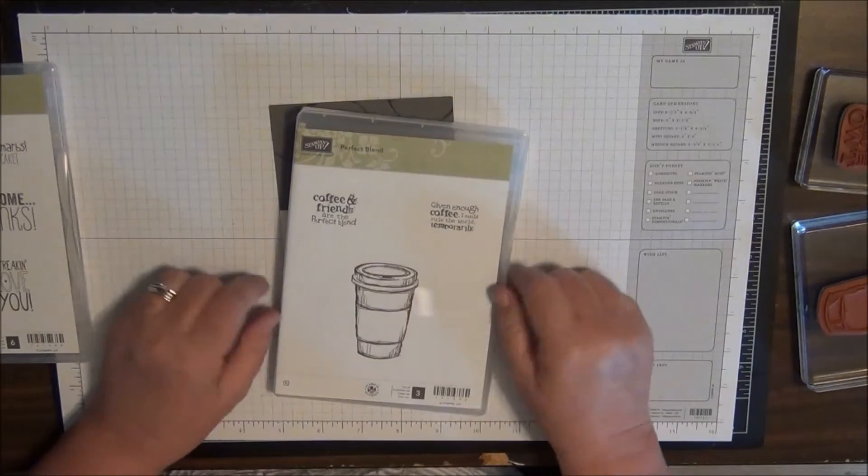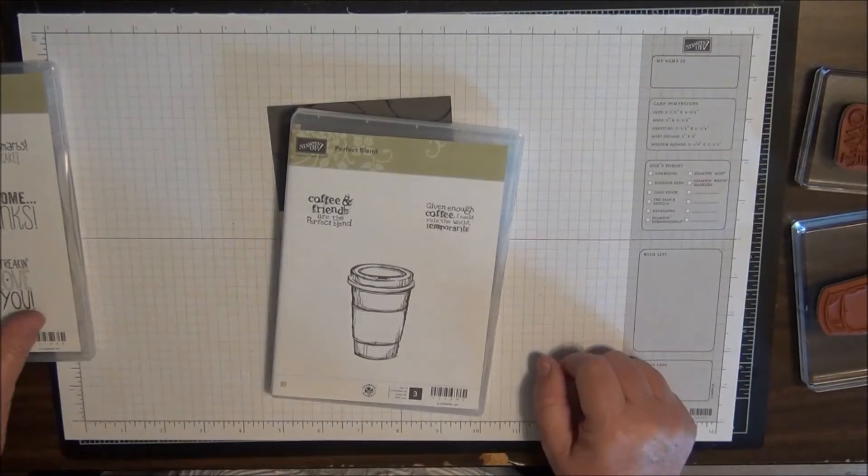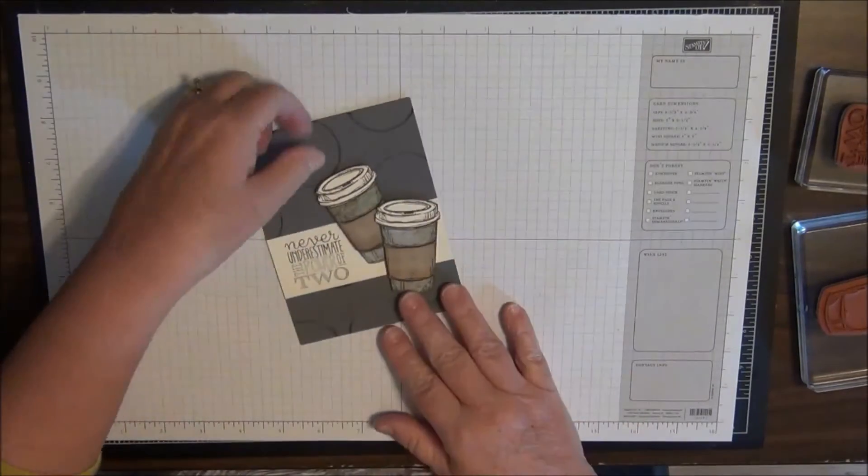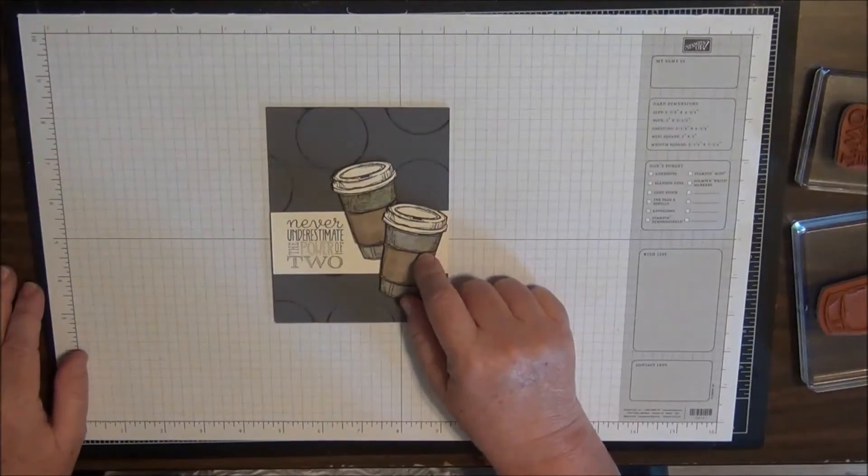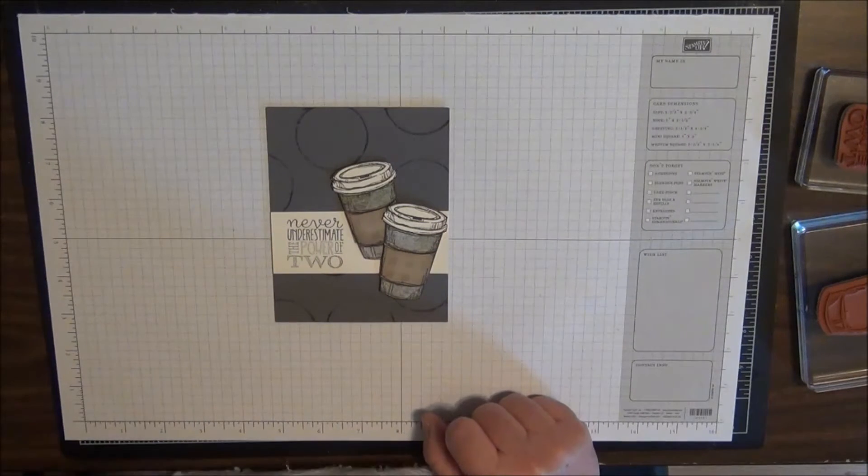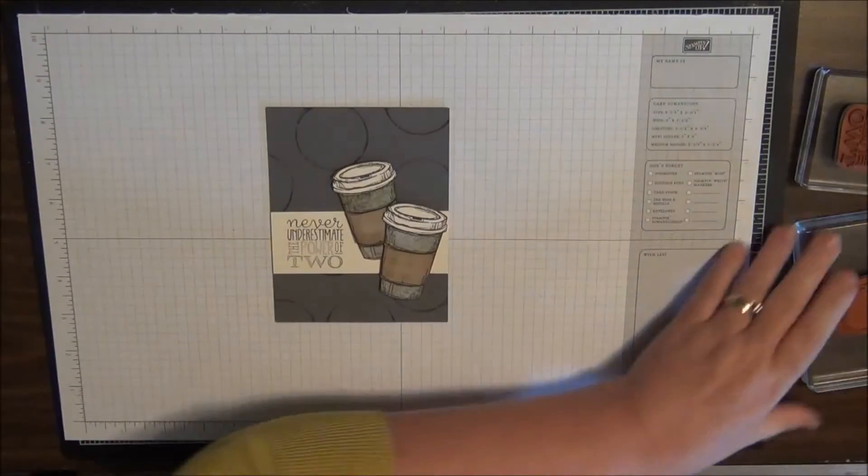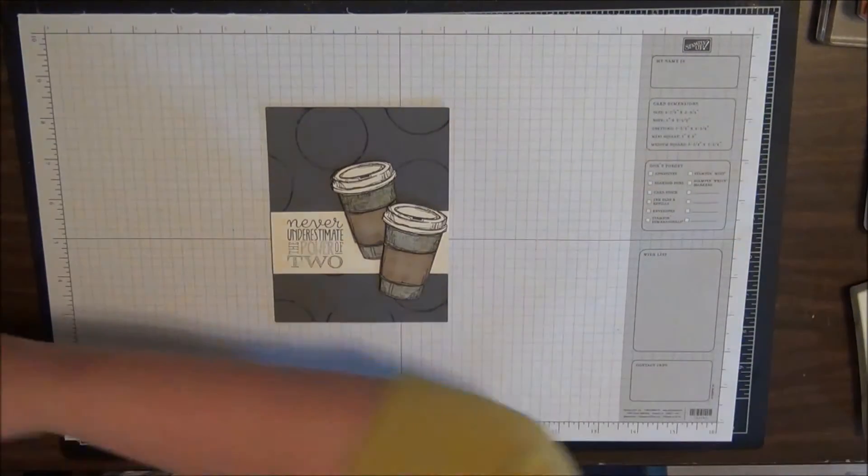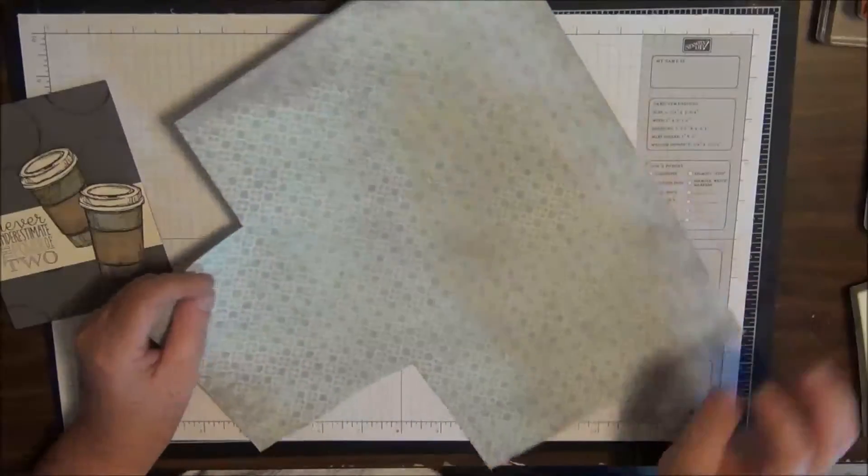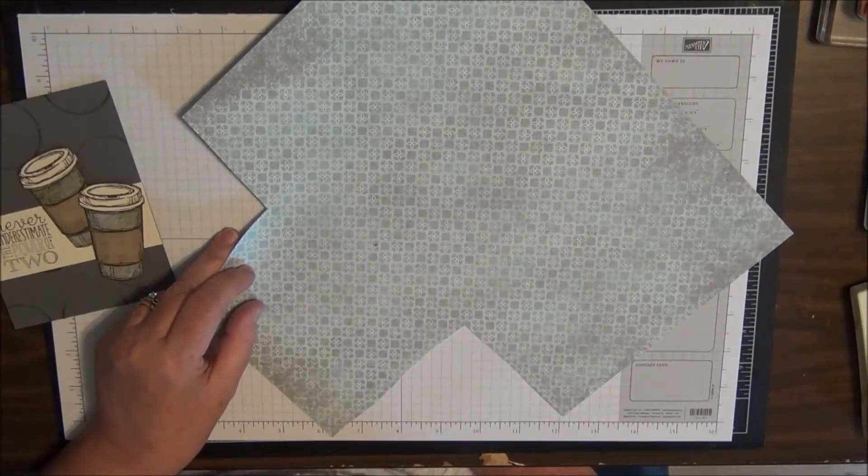Okay, now we can get started. To make my coffee cups I'm going to be stamping this image quite a few times. The first place I'm going to stamp it is on some designer series paper.